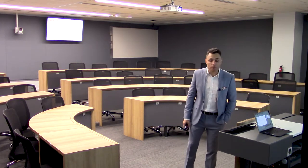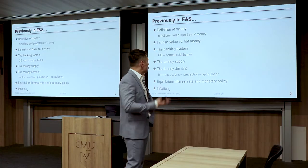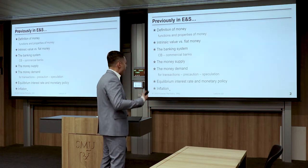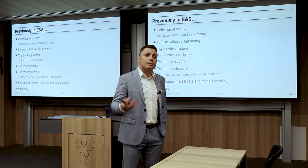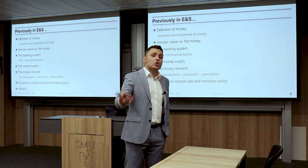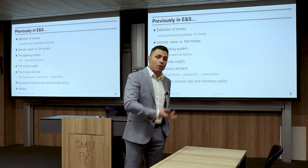Let me catch you up with what we talked previously in economics and society. We started by defining what money is — its functions, roles, and properties. We talked about intrinsic value and fiat money, two different kinds of money: one that has value in itself and the other that just represents trust from the government.